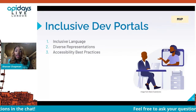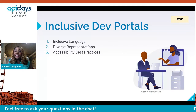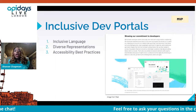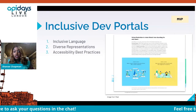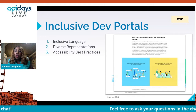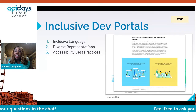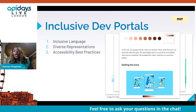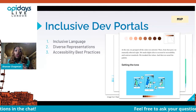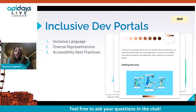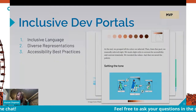Dev portals are another avenue of communication and a place where you can consciously consider inclusive language, diverse representations, and accessibility best practices. Plaid is doing a great job here, using their developer portal as a means of communication — using illustrations and presenting knowledge in an easy-to-use way for business users and API consumers, making sure the API is understandable. They are also intentional about using diverse skin tones in their dev portals and documentation, with the idea that you're working on globally used APIs and including the global community in this practice.